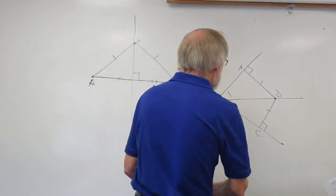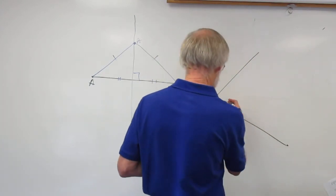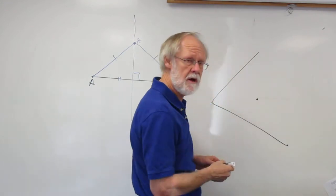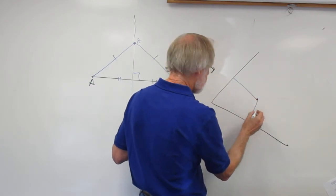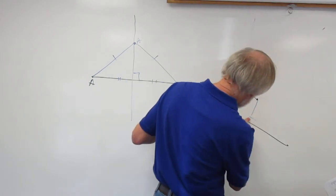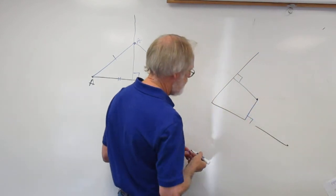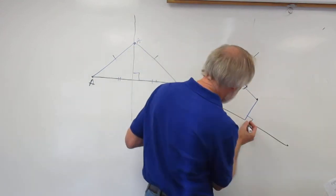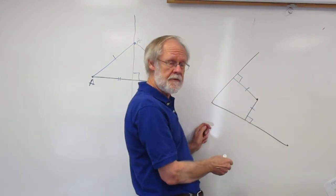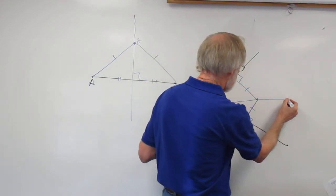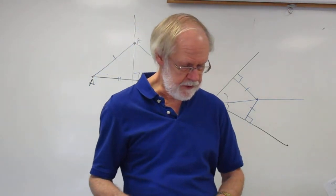That also works as a converse, and we do have the converse of that theorem. If you have an angle and a point in the interior of the angle, and it is equidistant from the two sides of the angle, then this point lies on the angle bisector. So that's Theorem 5.3 and 5.4.